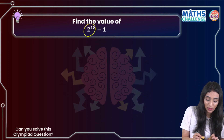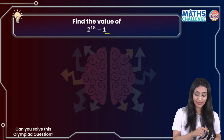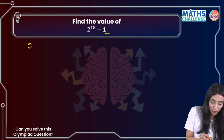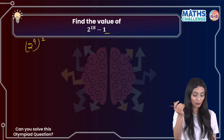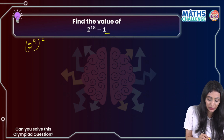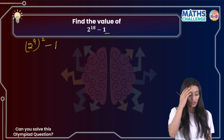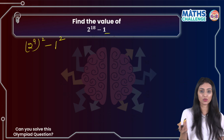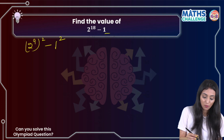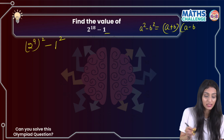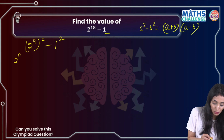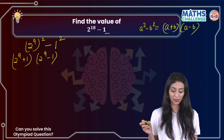So 2 to the power 18 minus 1 — can I write 2 to the power 18 as 2 to the power 9, whole square? Yes, multiplying 9 and 2 still gives 2 to the power 18. And 1 can be written as 1 squared. Now we know the identity a squared minus b squared equals a plus b times a minus b. So I can write this as (2 to the power 9 plus 1) times (2 to the power 9 minus 1).